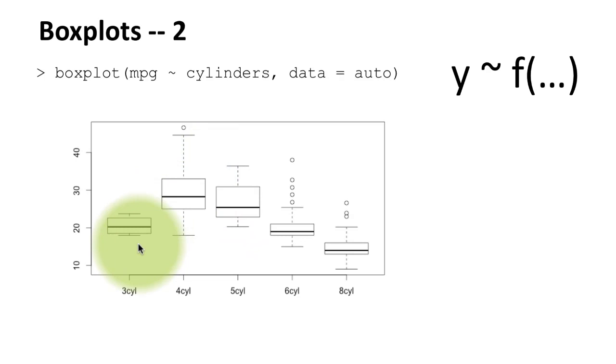But when it comes to three-cylinders and four-cylinders, even there, if you look at the box alone, the boxes do not overlap. But if you look at the complete chart, there are three-cylinder cars because, remember, it's going all the way up to the top whisker which is higher than the bottom whisker of this. Which means there are four-cylinder cars which have better performance than some... There are three-cylinder cars which have better performance than some four-cylinder cars, but by and large, four-cylinder cars have a better performance.